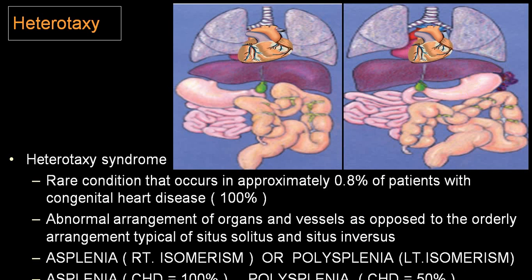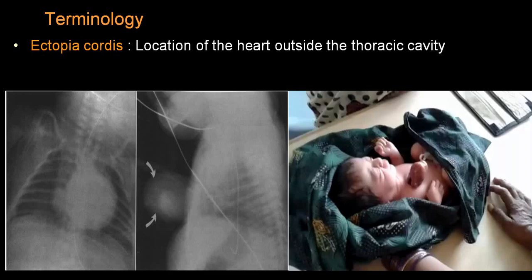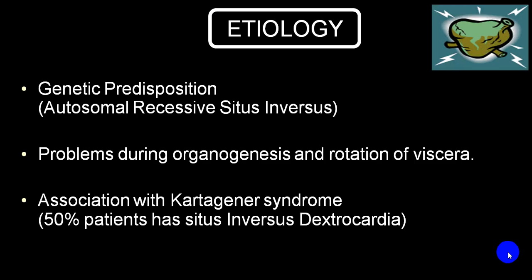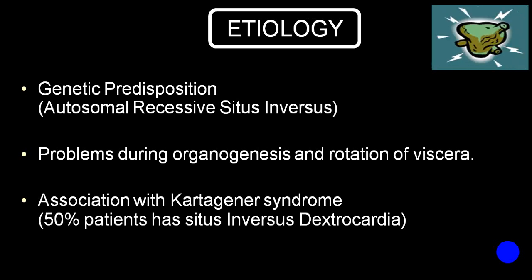In ectopia cordis, the heart is outside the chest wall. The chances of congenital heart disease are very high but the mortality rate is also very high. The commonest cause of dextrocardia is genetic — it is autosomal recessive — where you get situs inversus, or mirror image complete situs inversus with dextrocardia.